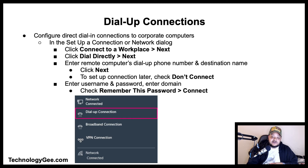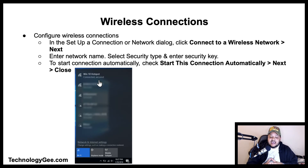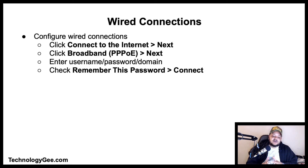Wireless connections can be established by clicking on the SSID from the taskbar or Settings menu. In the Setup a Connection or Network dialog, click 'Connect to a wireless network,' hit Next, enter the username, select the security type, and enter the security key. To start the connection automatically, check 'Start this connection automatically,' hit Next, then Close.